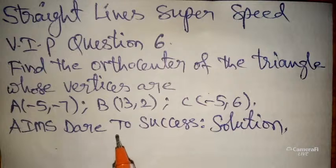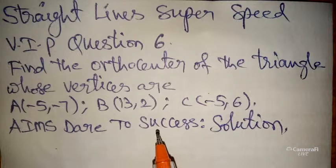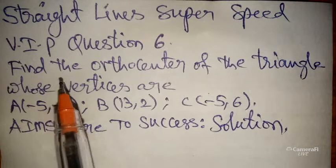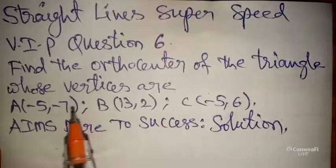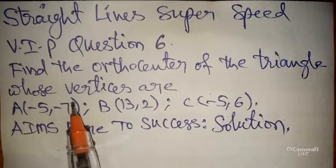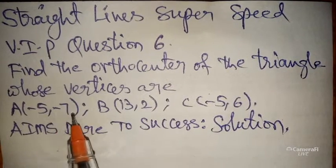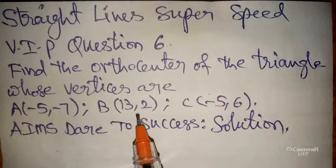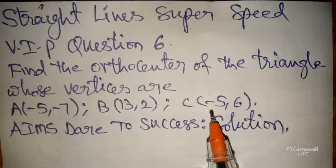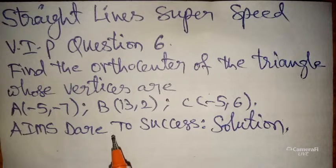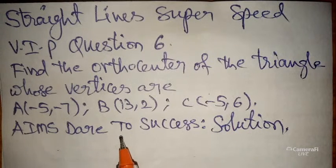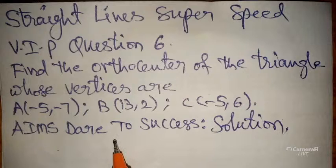Today our question is: find the orthocenter of the triangle whose vertices are — first one: (-5, -7), second one: (13, 2), third one: (-5, 6). Some students asked me they are having trouble solving orthocenter type of questions.